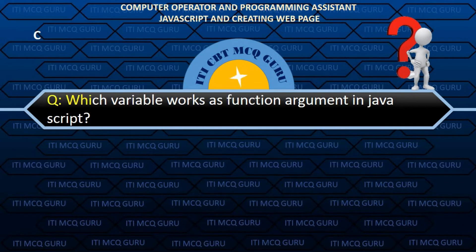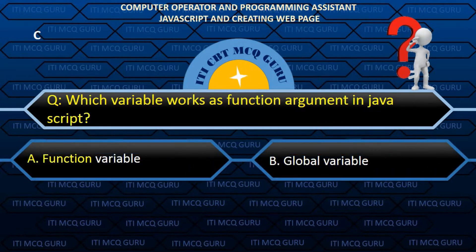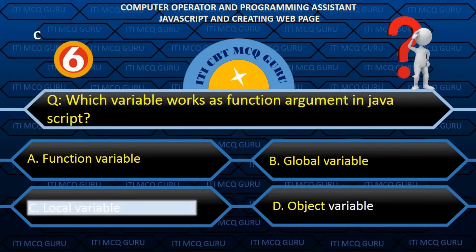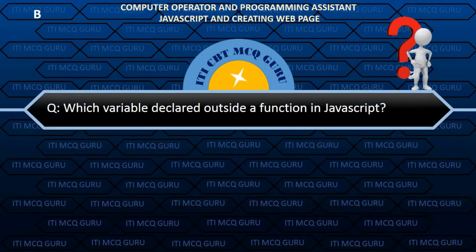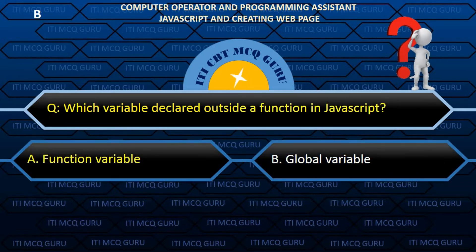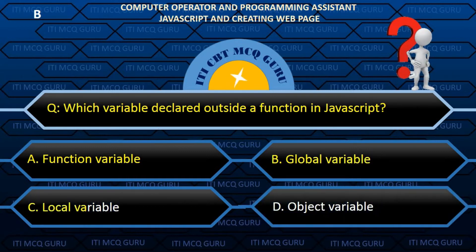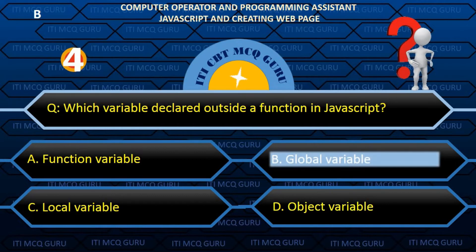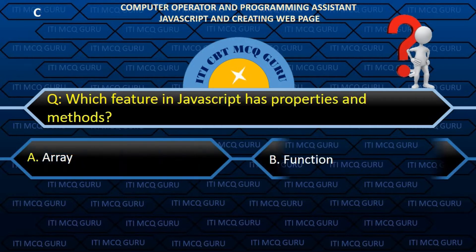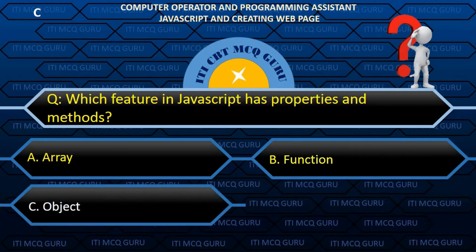Which variable works as a function argument in JavaScript? C. Local variable. Which variable is declared outside of a function in JavaScript? C. Global variable. Which feature in JavaScript has properties and methods? C. Object.